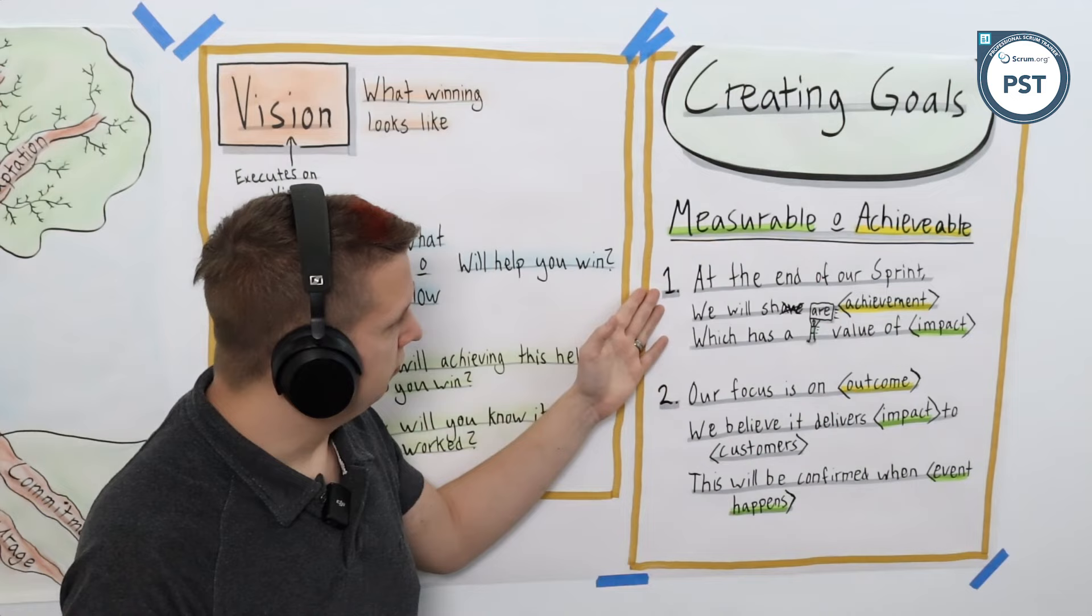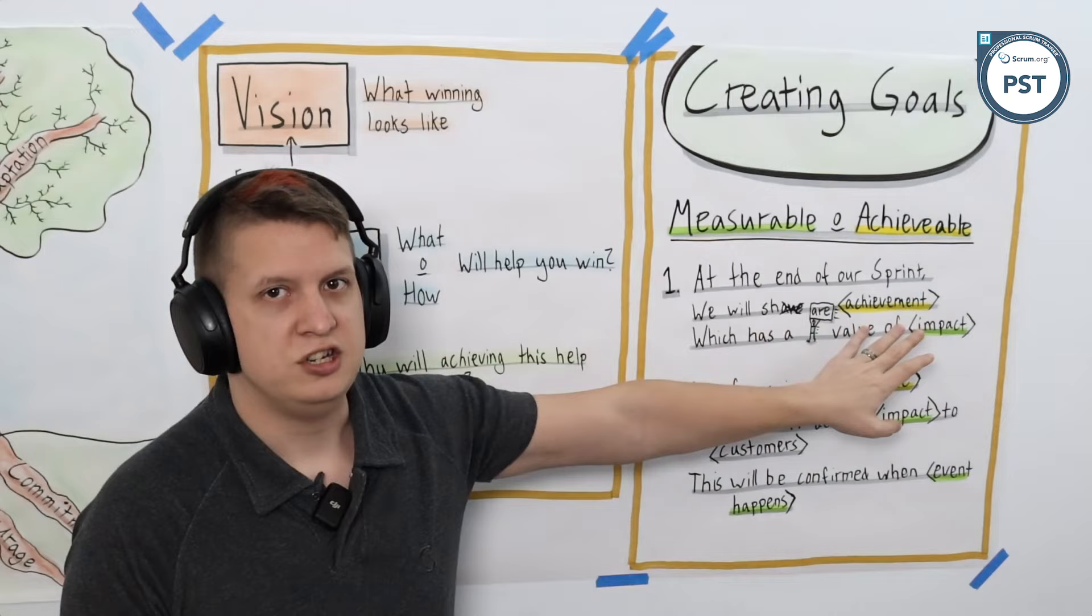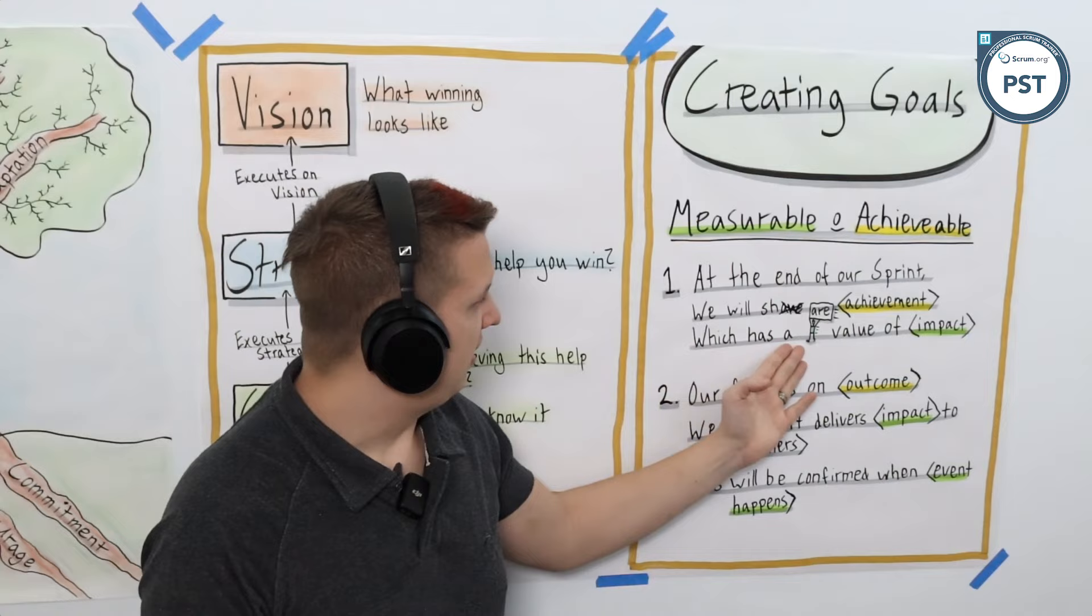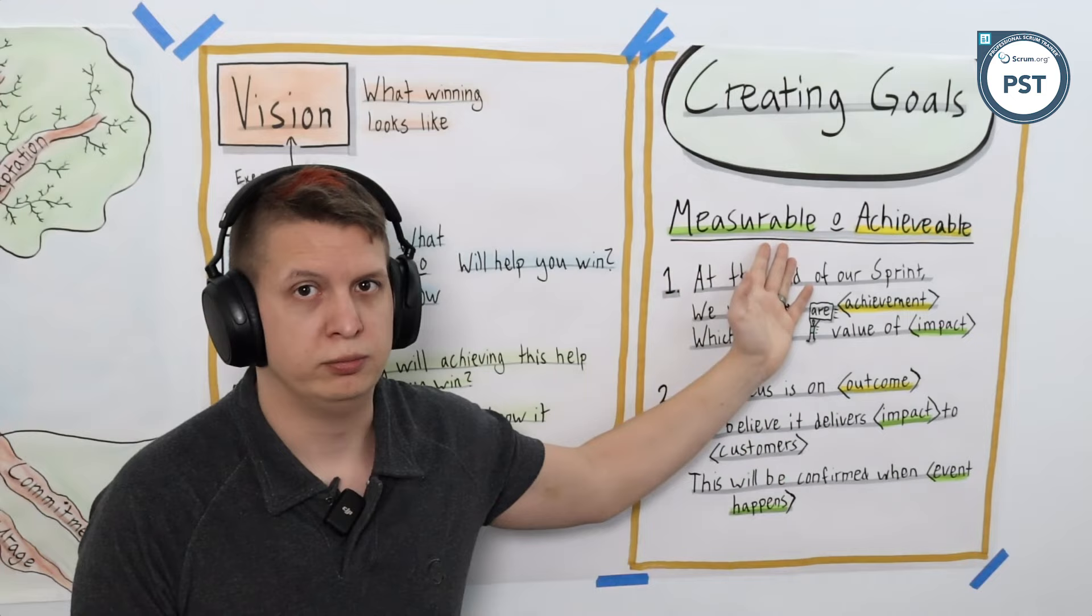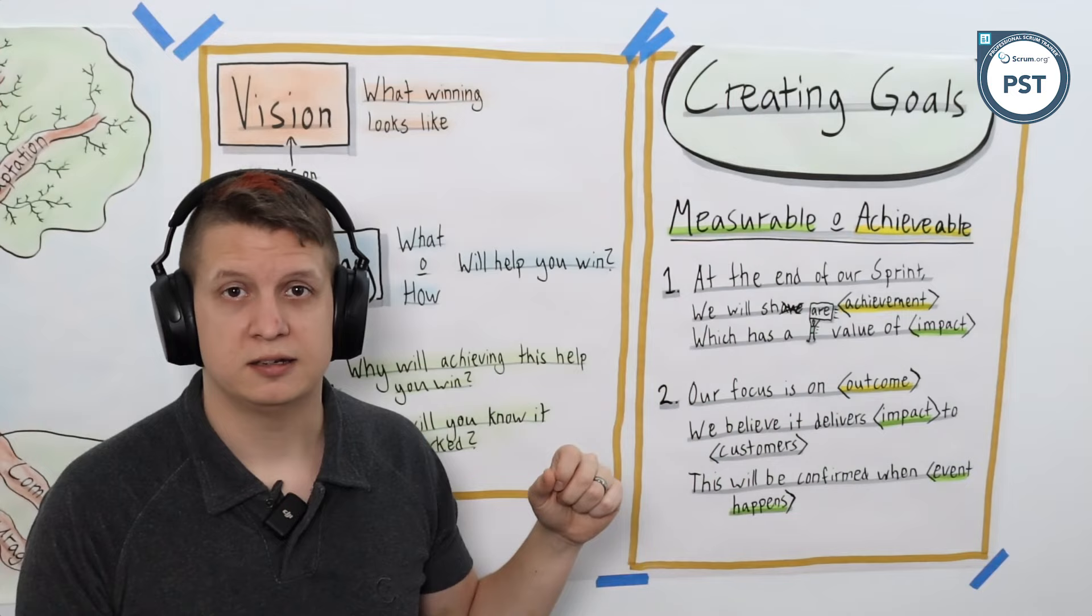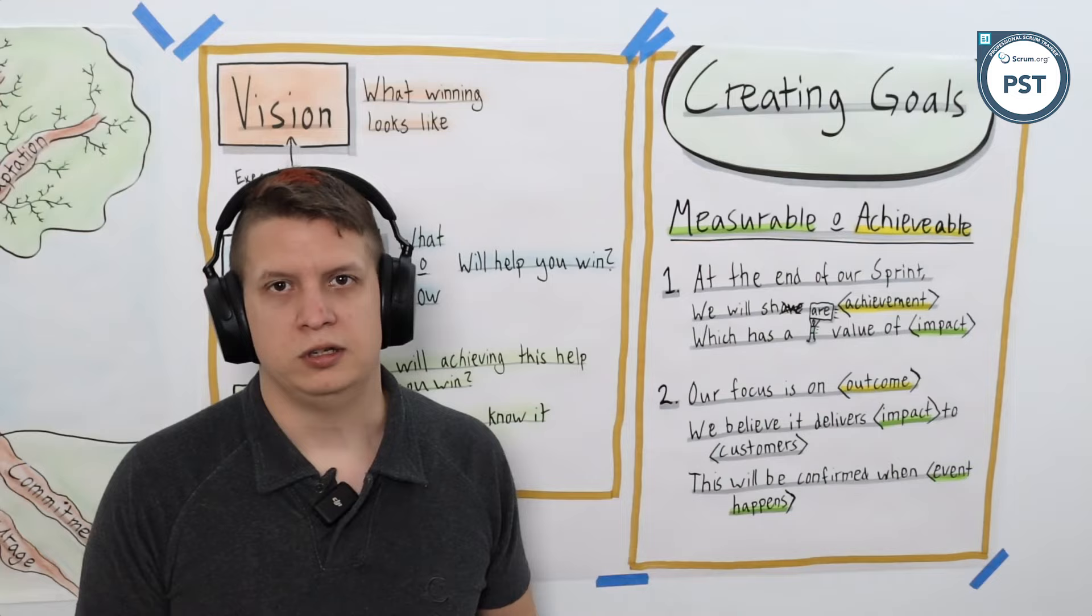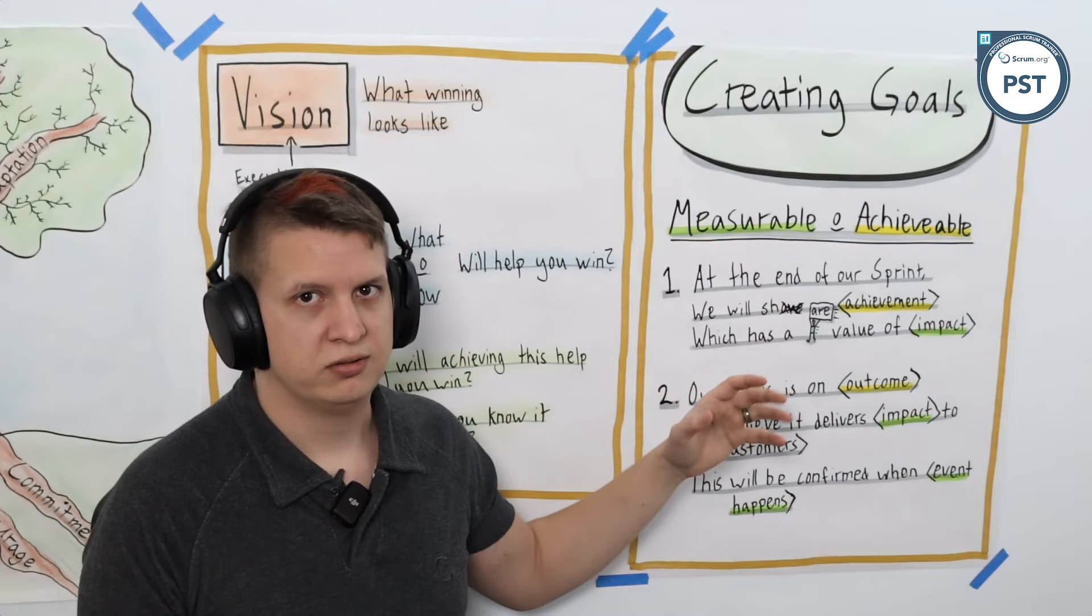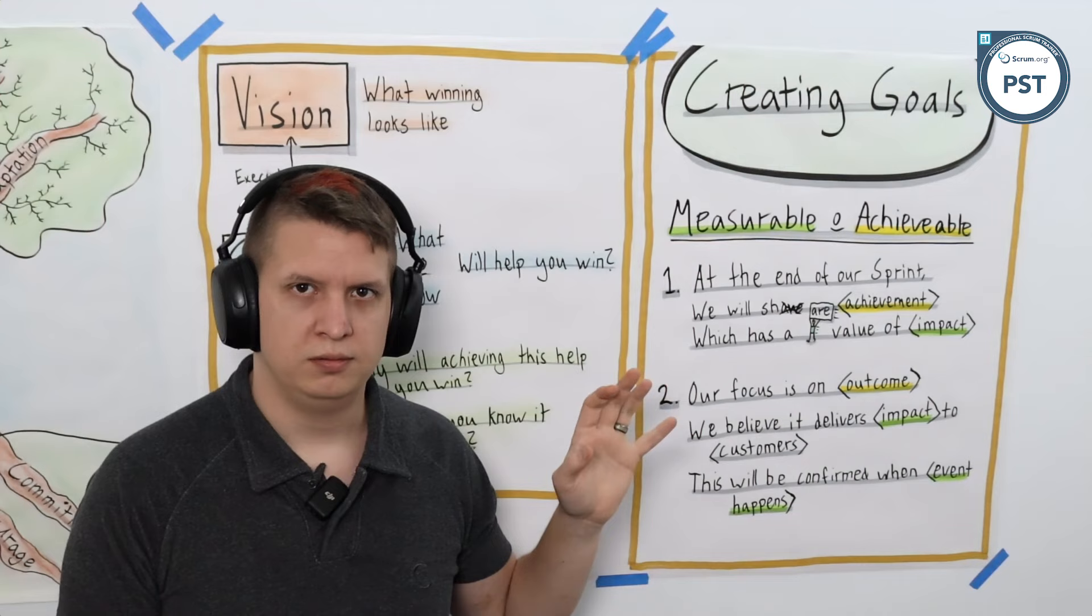So first of all, number one: at the end of our sprint we will share an achievement, which has a value of impact. Impact of course being measurable. It could be binary, it's either true or false, or it is something in terms of a percentage improvement, a point improvement, some kind of measurable impact. And I like this one because it's focused, it's to the point. This is what we're going to share and this is the impact it's delivering. This is what we're doing, this is why it's valuable, to the point, concise, solves the problem fantastically.